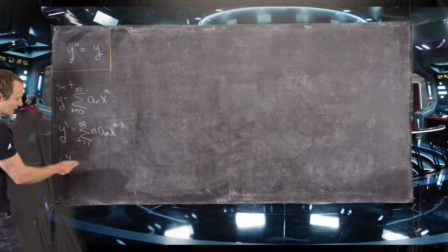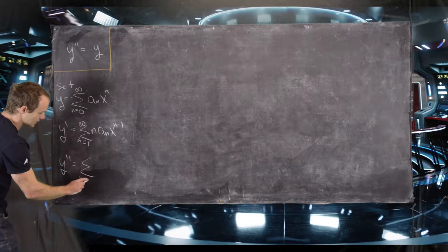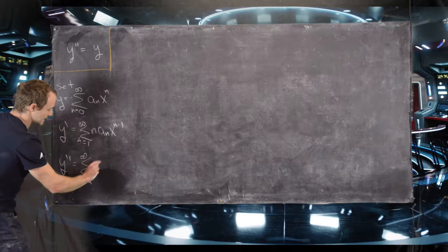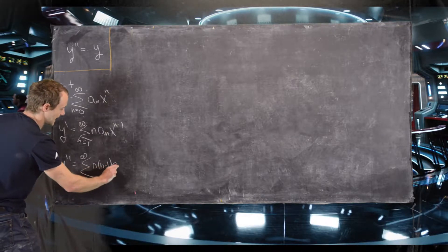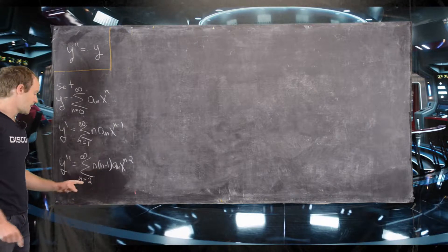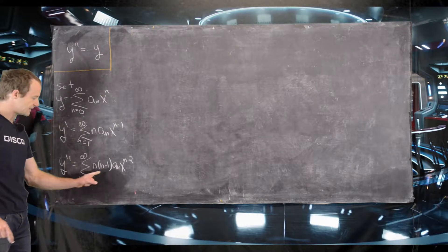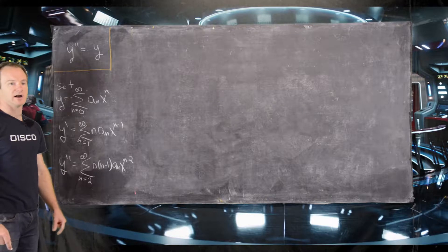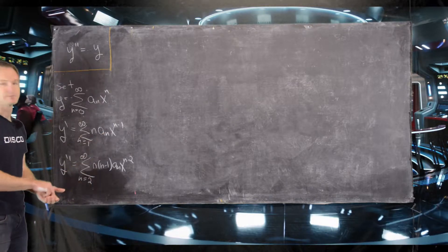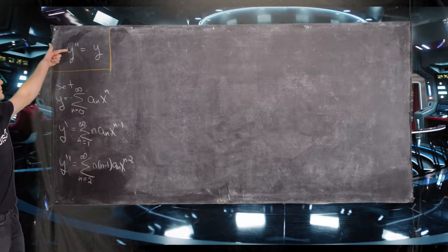Then y'', which is the one we actually need for our calculations, is the sum from n = 2 to infinity of n(n−1)·aₙ·xⁿ⁻². I cut out the n = 1 term here because that would give 0 again. This was obtained by term-by-term differentiation from one step to the next.